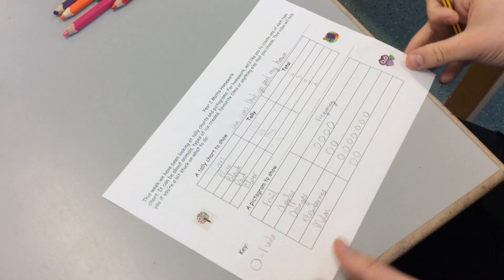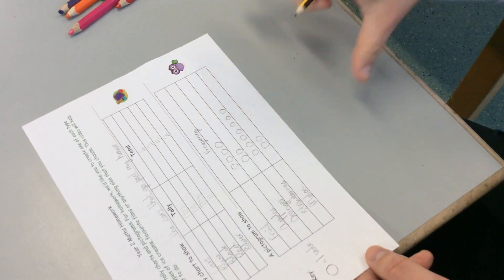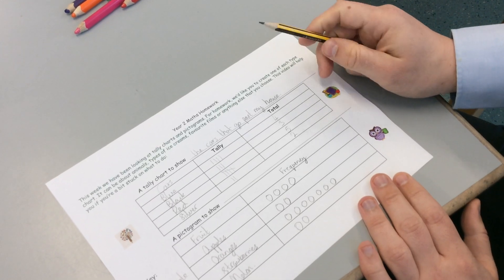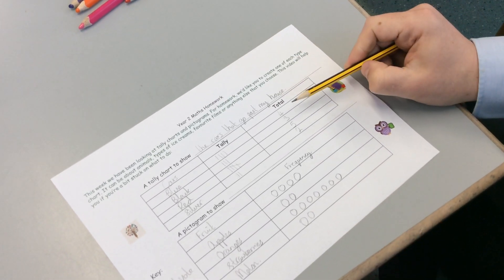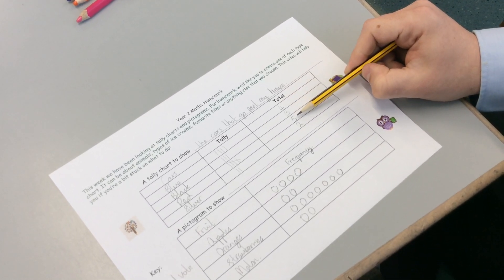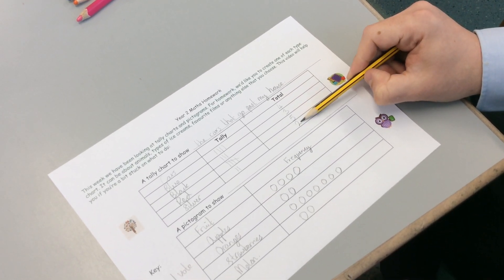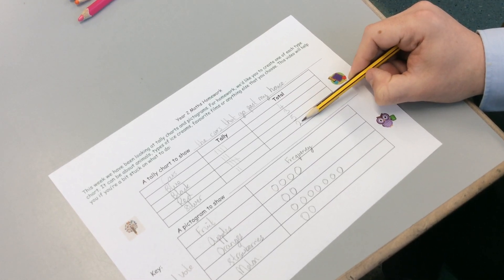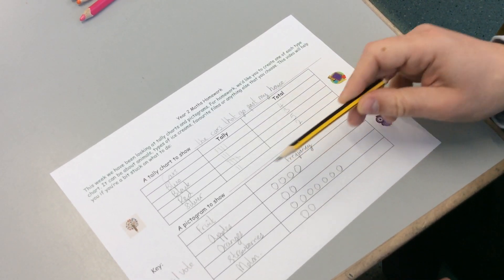What you could also then do is stick that on one side. And then on the other page, you could do some little sentences that go with it. So I could say for this one here, there were three more red cars than silver cars. Because red's got five, silver's got two. I could say on this one,